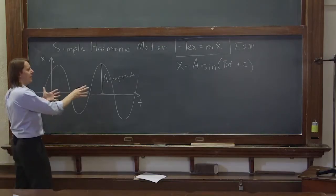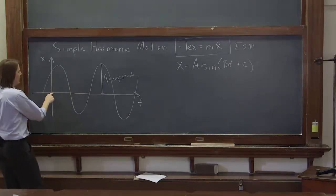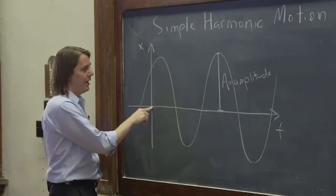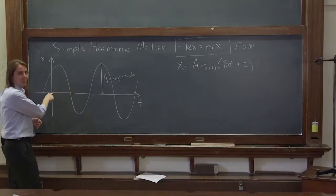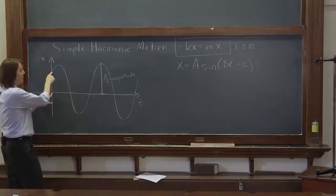c is called the phase lag. It has to do with where the sinusoid sits relative to the origin. So if this is the origin of time, this is 0, and the sine of 0 is 0. So really, a sinusoid should have 0 value there. But I gave it a value.